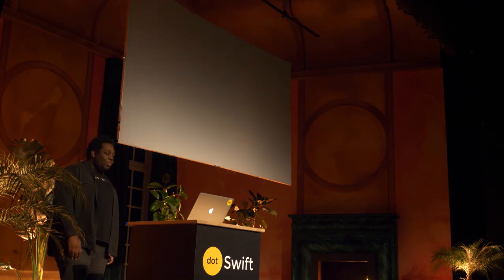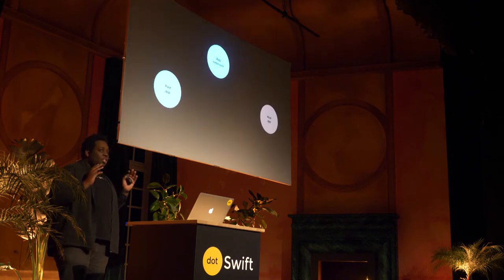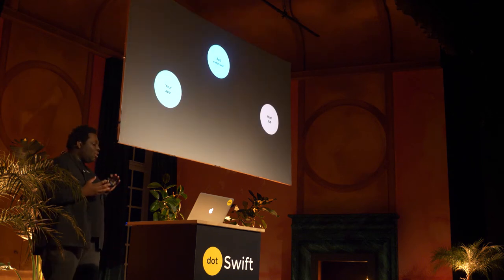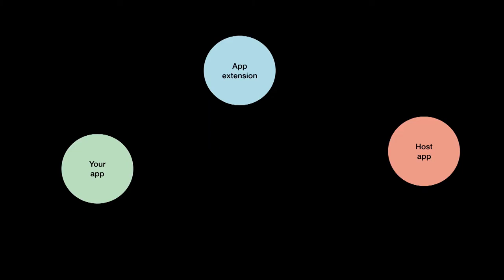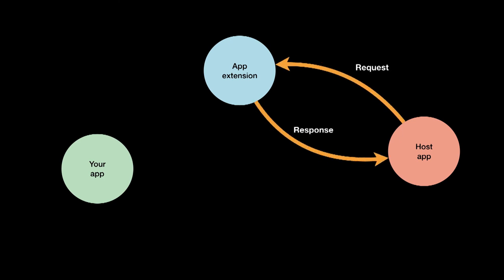Basically, there are three different actors: there is your application, your extension, and the host app. The host app is the app that the user is currently using, and it's the app that triggers your extension. You can communicate directly from the host to your extension, and behind the scenes, to make that happen, Apple uses inter-process communication.